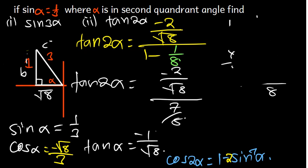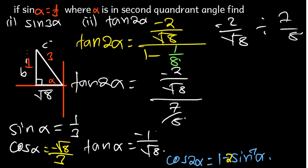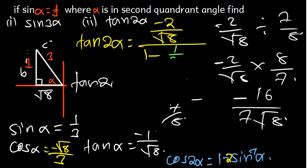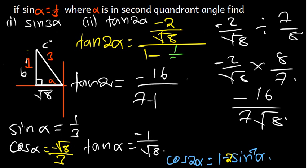So tan 2 alpha equals (negative 2 over root 8) divided by (7/8). Dividing by a fraction means multiplying by its reciprocal: negative 2 over root 8 times 8 over 7, giving negative 16 over 7 root 8. This is our answer for Part 2. That's how you work out this type of trigonometry question.